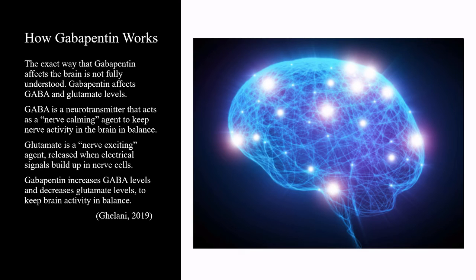The exact way that gabapentin affects the brain is not fully understood. Gabapentin affects GABA and glutamate levels. GABA is a neurotransmitter that acts as a nerve calming agent to keep nerve activity in the brain in balance. Glutamate is a nerve exciting agent released when electrical signals build up in nerve cells. Gabapentin increases GABA levels and decreases glutamate levels to keep brain activity in balance.